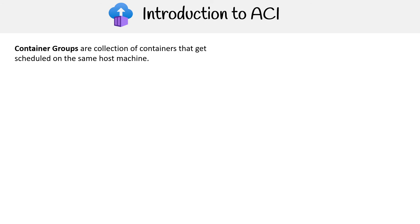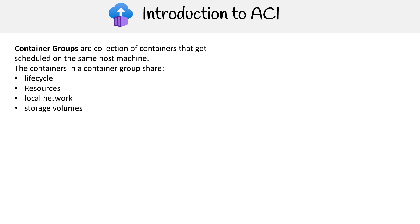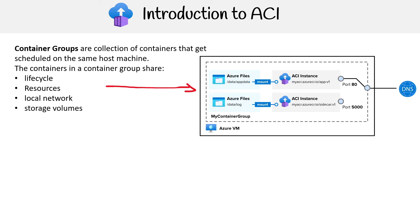Let's talk about container groups, because this is pretty much the only major component you have to worry about. These are a collection of containers that get scheduled on the same host. The containers in a container group share lifecycle, resources, local network, and storage volumes. So the idea is that you have these tightly coupled containers, and all of them act as a service within that container group. Here you can see an example of a couple of containers mounting Azure Files on different directories.